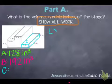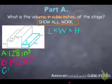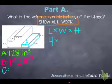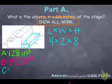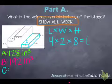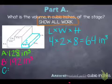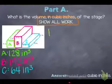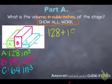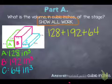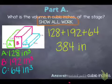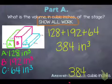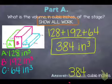Now to find the volume of my last piece, I'll do length times width times height. We have a length of 4, width of 2, and height of 8. Multiplying those out gives 64 cubic inches. To find the total volume, I add up all these pieces: 128 plus 192 plus 64, which gives a grand total of 384 cubic inches. That completes part A of this problem.